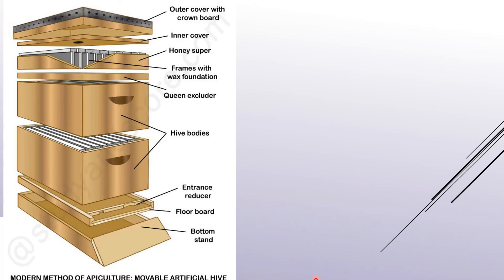The artificial manmade structure used for apiculture is a beehive with parts including a bottom stand, floor board, entrance reducer, hive bodies where worker bees process honey, queen excluder, frames with wax foundation, honey super, inner cover, and outer cover with crown board. You are supposed to remember which part is labeled as what.